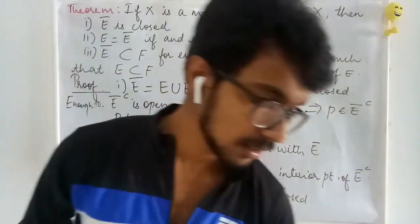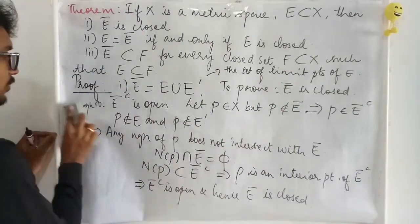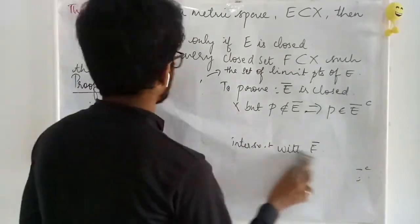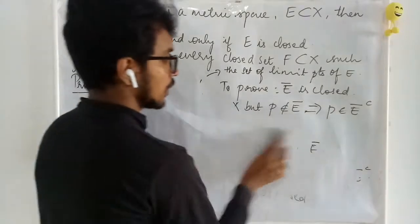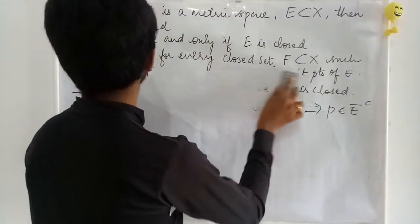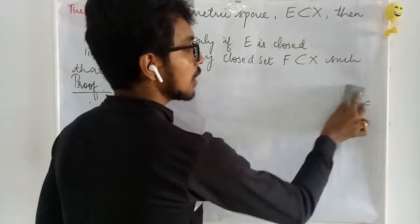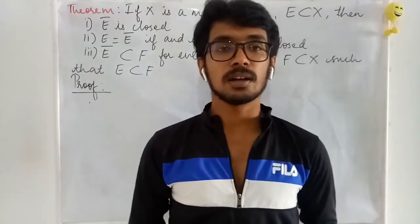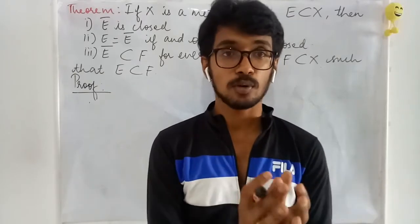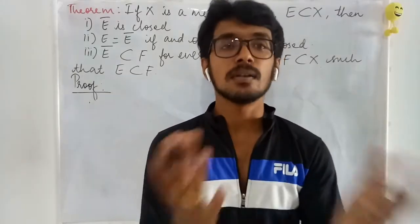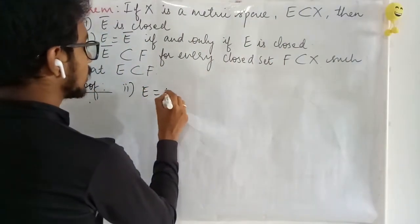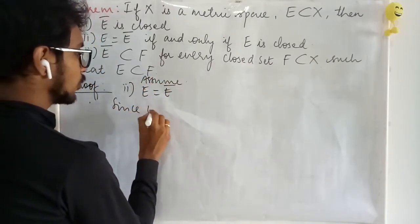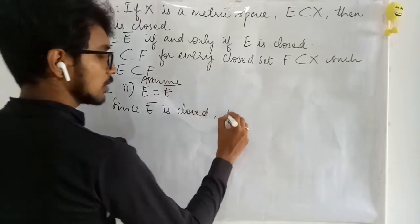Next we prove the second result. First, assume E equals E-bar and we want to show E is closed. From the first part we proved E-bar is always closed for any set E, regardless of whether E is open or closed. Since E equals E-bar and E-bar is closed, E is closed. This proves one direction.